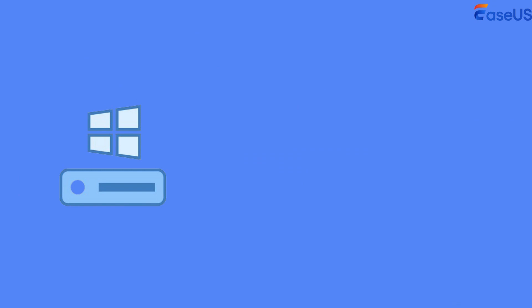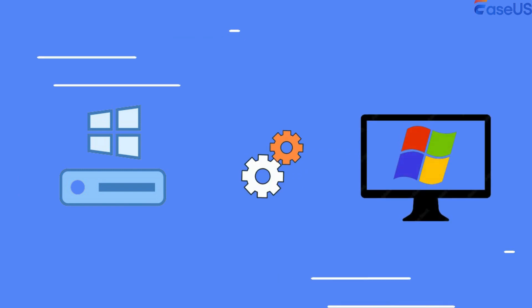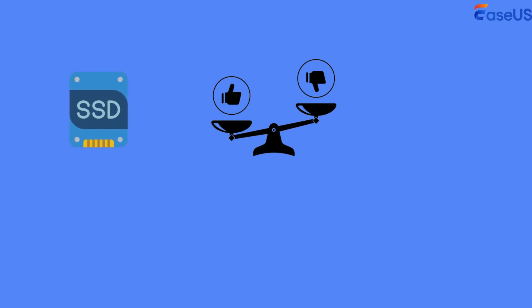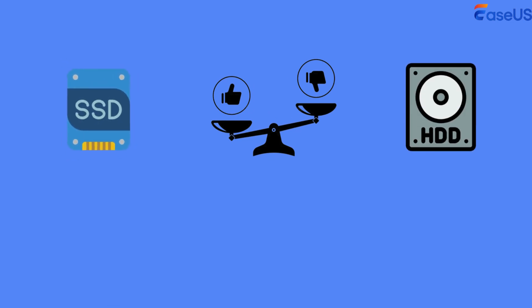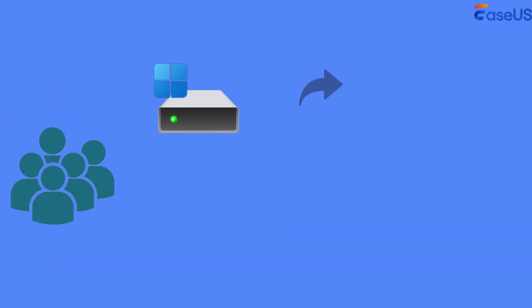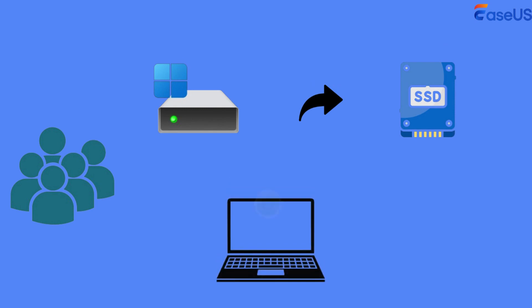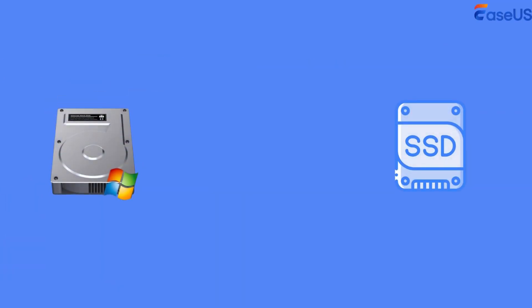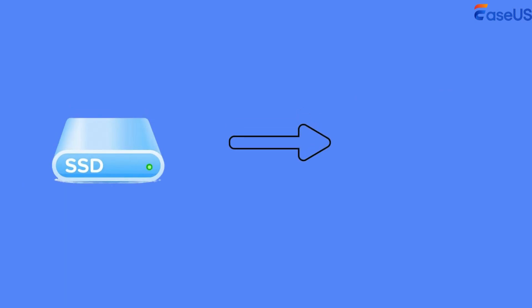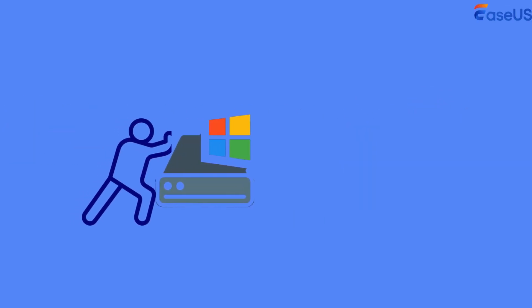The C drive is the local drive from which your operating system runs. SSDs outperform HDDs as boot drives in many aspects, such as faster read and write speeds and lower power consumption. Therefore, many computer users want to copy C drive to SSD to enjoy faster computer boot time. Whether you want to replace HDD with SSD entirely, or just use SSD for Windows OS, you need to transfer C drive to new SSD.